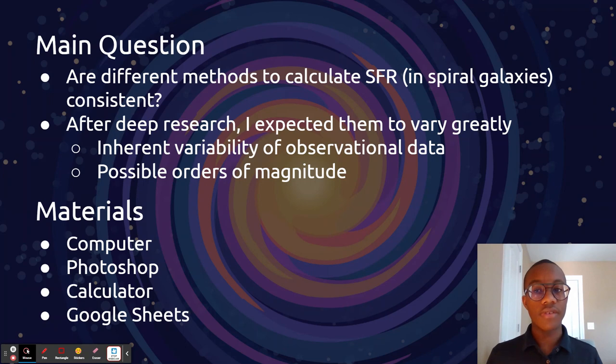I want to ask if different methods used to calculate star formation rate are consistent. I don't expect them to be because there's a lot of inherent variability in the data I'm working with, and stuff could vary by possible orders of magnitude.